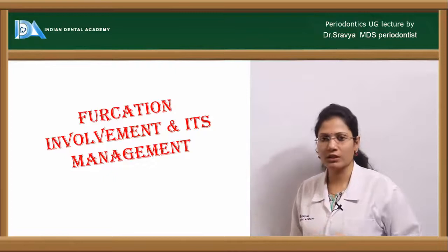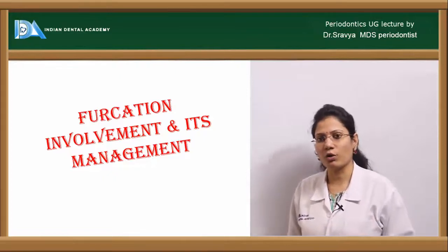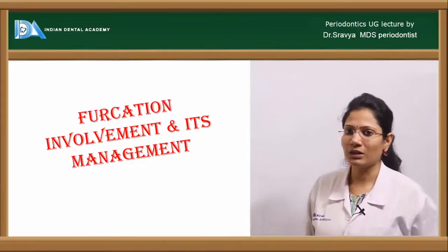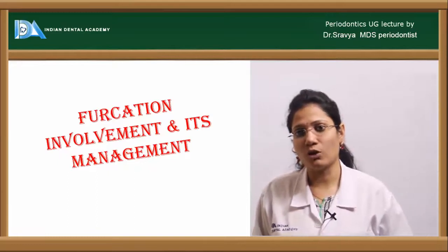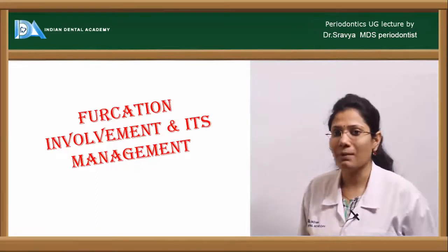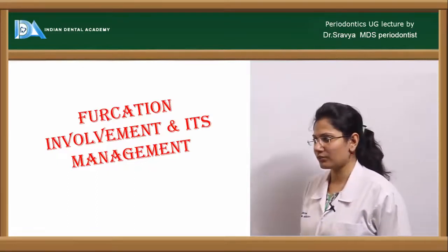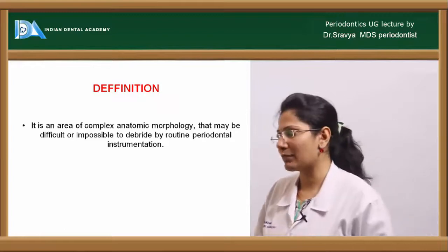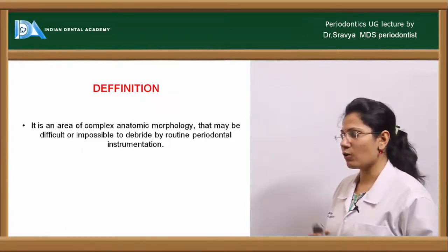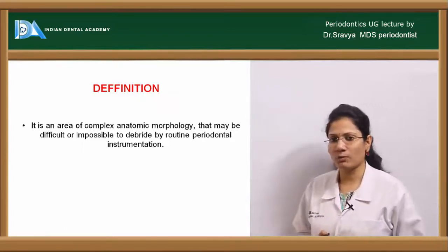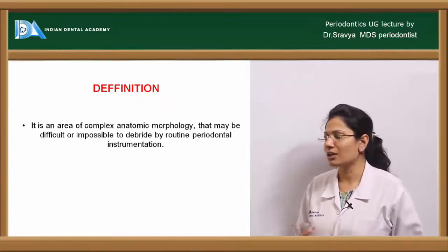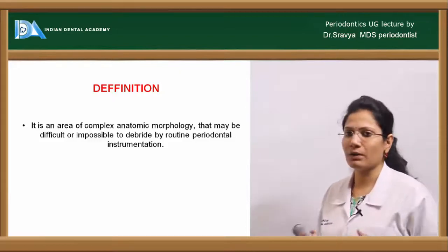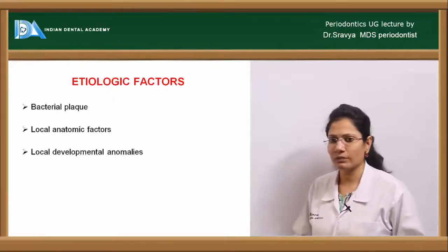We will look further into how furcation involvement occurs, how to diagnose these cases, and how to manage them. According to the definition, furcation involvement can be defined as an area of complex anatomic morphology that may be difficult or even impossible to debride by routine periodontal instrumentation.